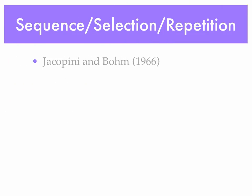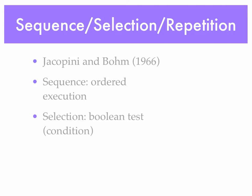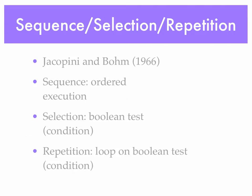In 1966, two computer scientists, Jacopini and Bohm, put forth the theorem that all programming uses these three methodologies: sequence, selection, and repetition. Sequence is the ordered execution of a series of instructions, one after another. Selection is taking a different path within my program based on the results of a Boolean test — something that comes out to either true or false. We call that a condition. And then we have repetition: we loop or repeat something based on the results of a Boolean test, a condition.